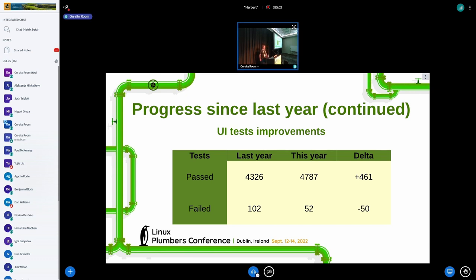So, the progress on the UI test, those tests are tests that compile a Rust program and checks the stdout and stderr. So, the number of past tests increased by 461, and we have 50 less failures. So, we're getting there.